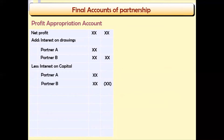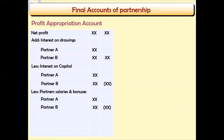Partner A and Partner B's interest on capital is deducted. Following that are partner salaries, bonuses, and commissions — these are deducted for Partner A and Partner B. Then interest on partners' loans: if partners have extended loans to the partnership and therefore earn interest, that is also deducted here for Partner A and Partner B.